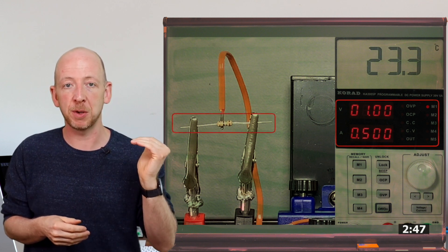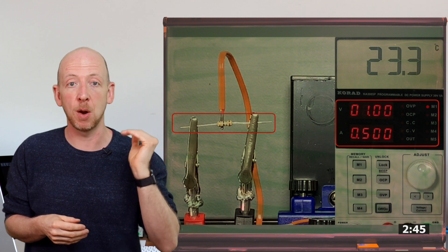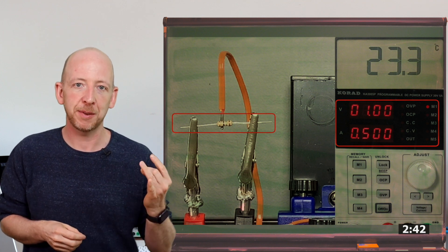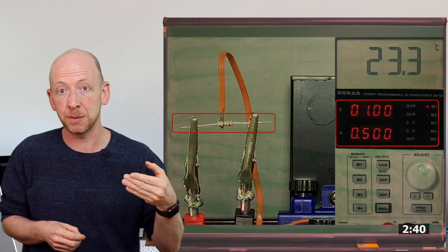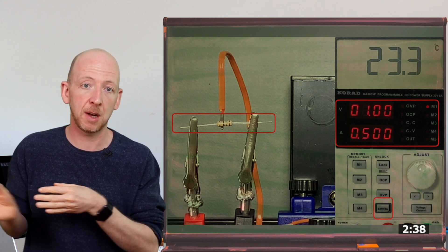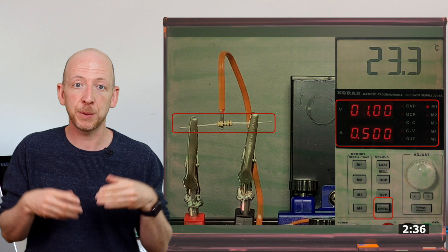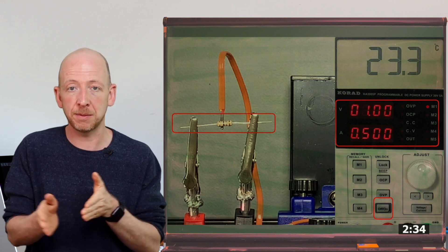The upper value in the display shows the voltage that has been set and the lower value displays the current. One useful thing here is that we can switch the voltage on and off with a push of a button, which means we can calmly wire everything first and only when we are done can we activate the source.